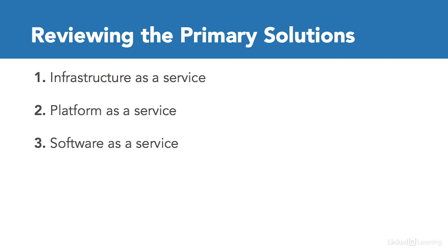Infrastructure as a service is where the cloud provider provides the physical infrastructure for your hosting solution — all of the data centers, servers, memory, and storage. That infrastructure is provided and rented to you as a service. Platform as a service is where there's some limited deployment already there, such as Windows or a database solution already implemented as a platform, and you rent services as part of that platform, building on top of the infrastructure.